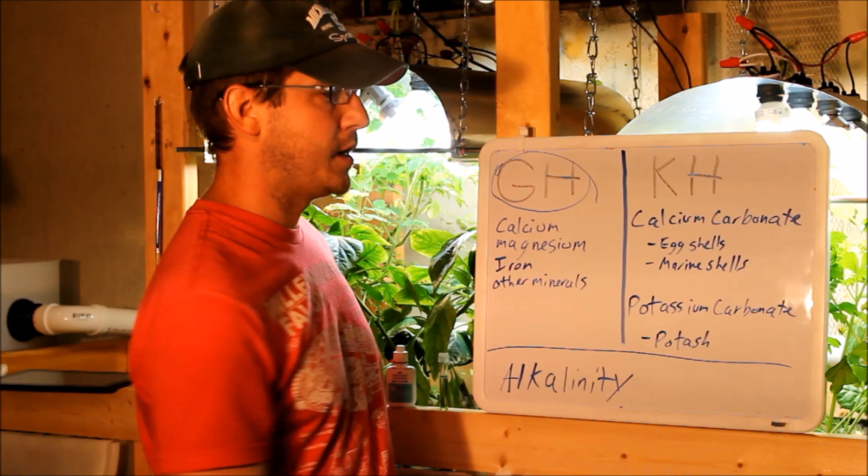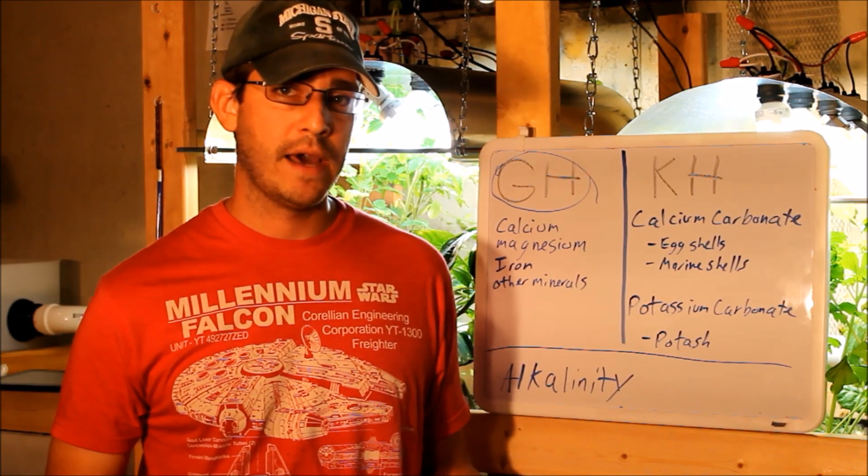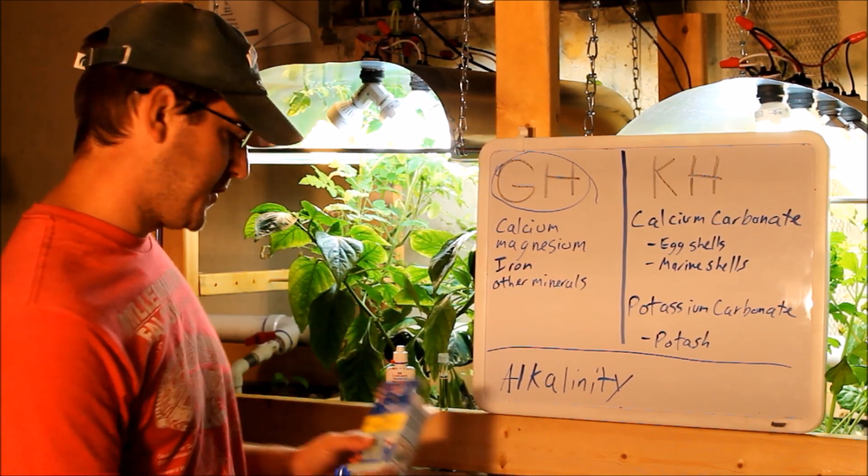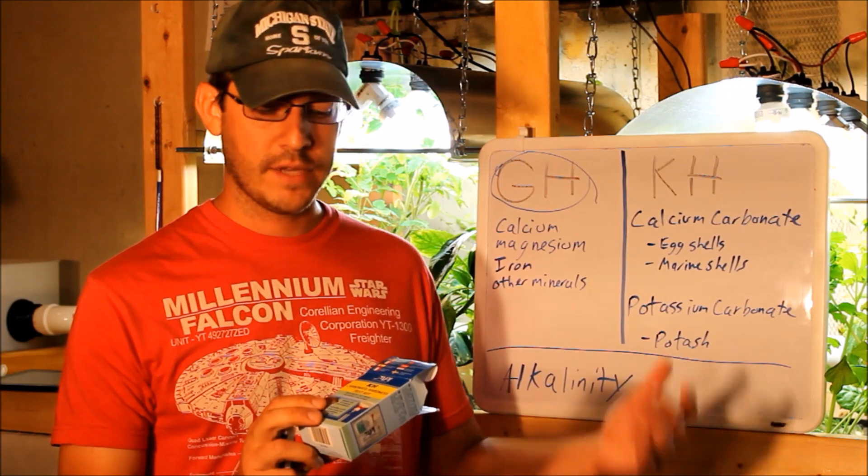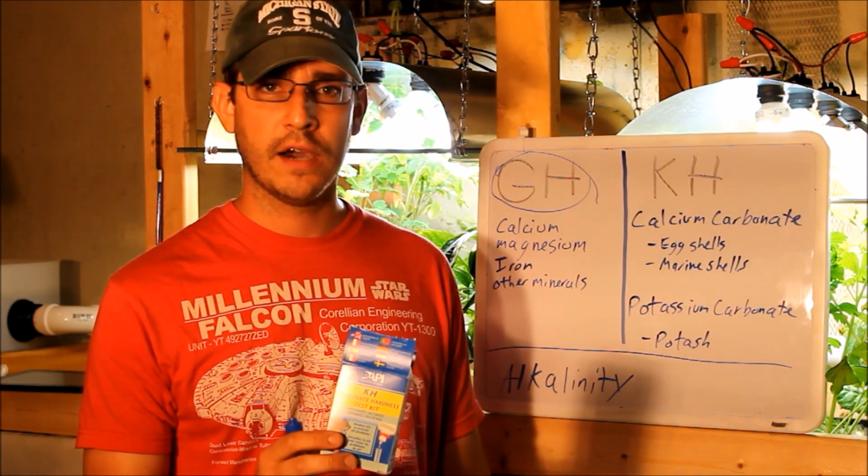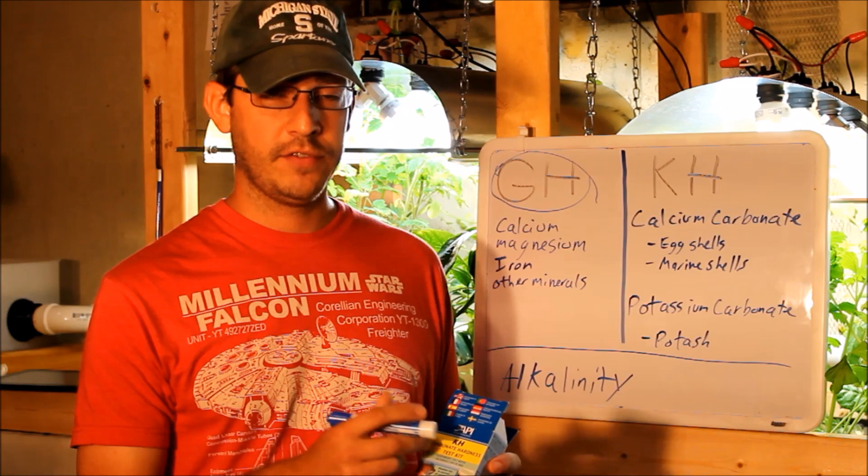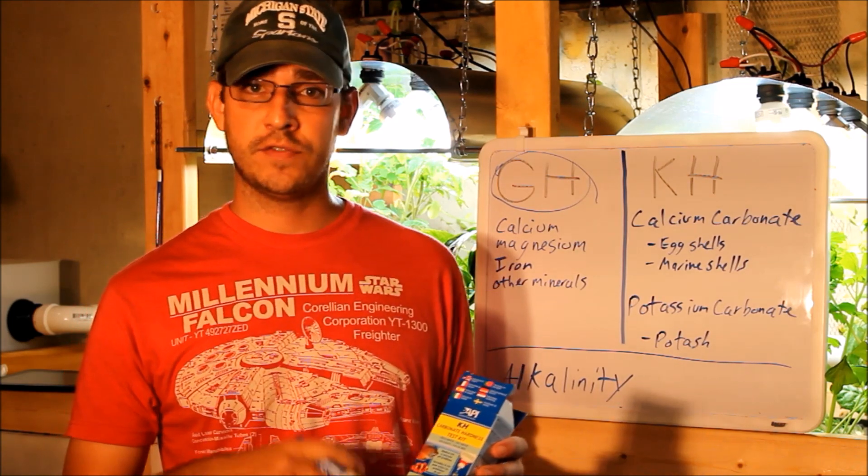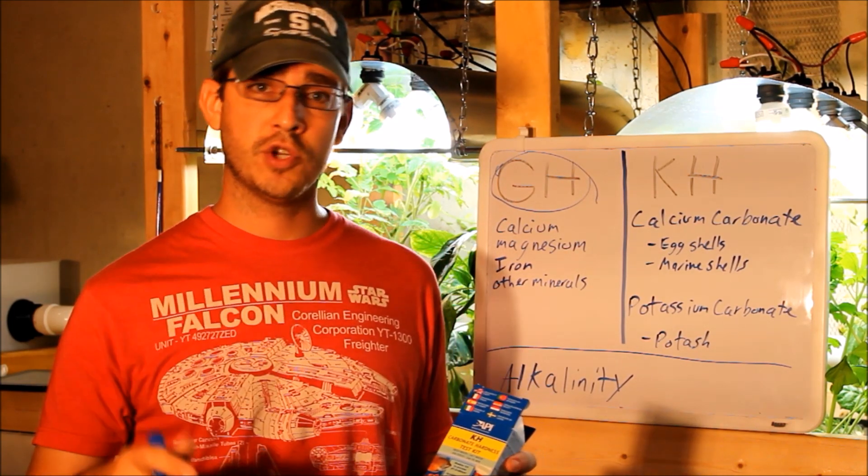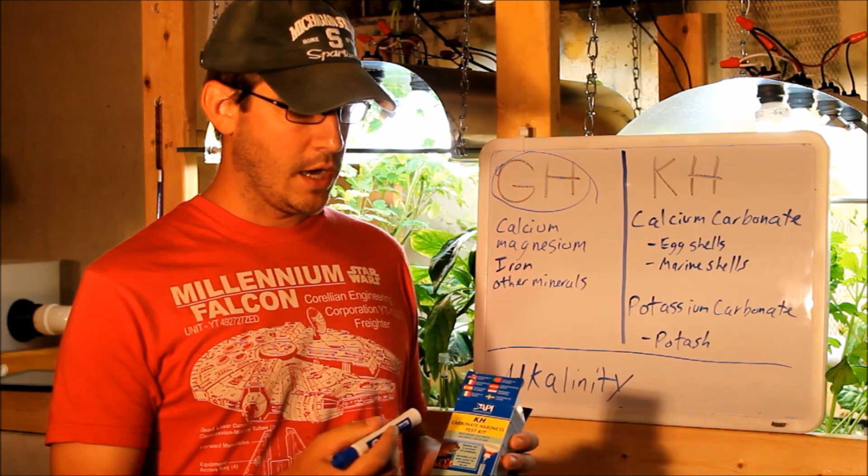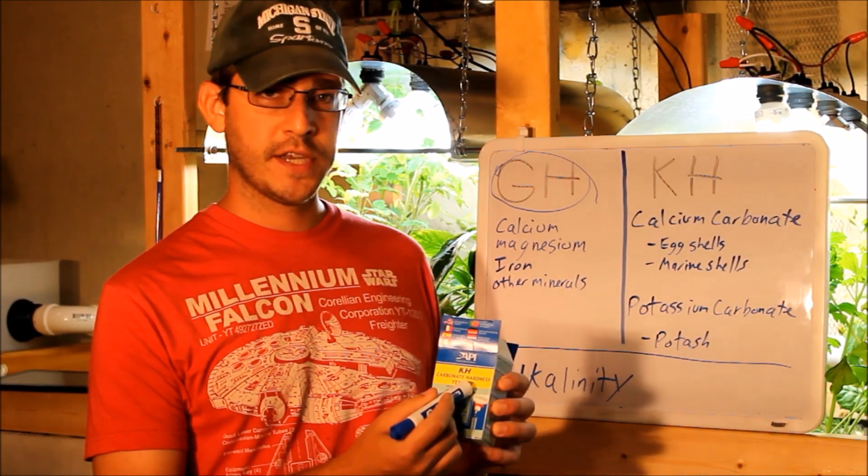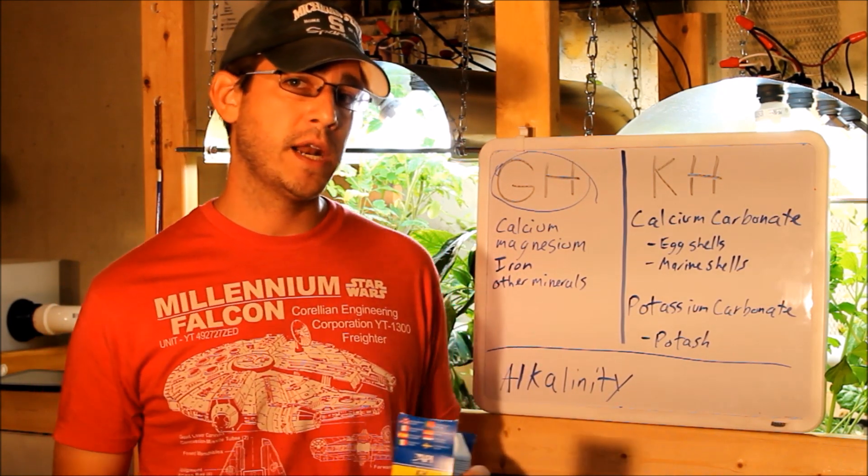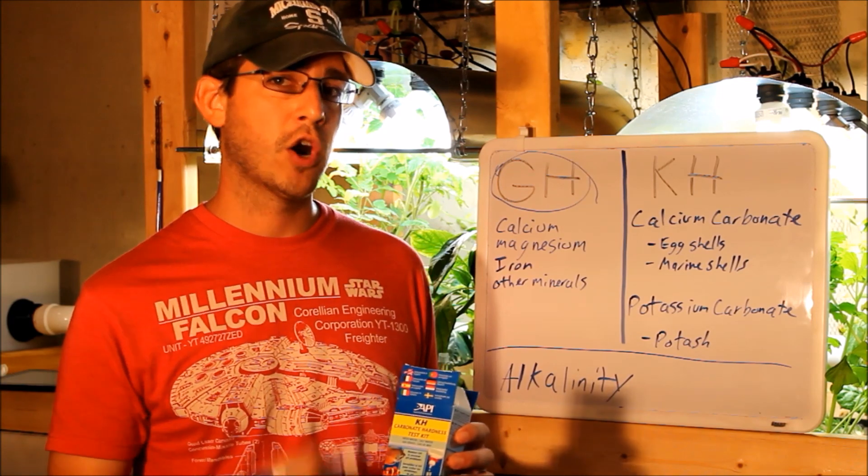So that's what the carbonate hardness is measuring. Now, what's good and what's bad, and how do you measure it? API makes a test kit that you can buy - I think it was like $10 on Amazon. API actually has a test kit for just about everything - iron, phosphorus, the master test kit which tests for pH, nitrite, nitrate and all that good stuff. I'd recommend looking into those. This is just a carbonate hardness test kit. There's also a general hardness test kit. As I explained, I'm not that concerned with that right now. This is the one that I'm using - it just tests for carbonate hardness.